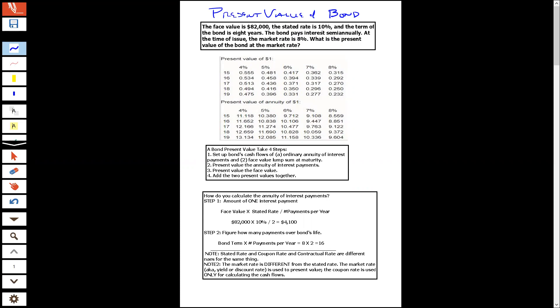The stated rate is 10%. The stated rate, other names for that is the coupon rate or contractual rate. The stated rate is going to be used to calculate the interest payments. The 8% market rate is going to be used to discount the bonds. And you're given a bunch of factors here. These factors are used to calculate the present values.